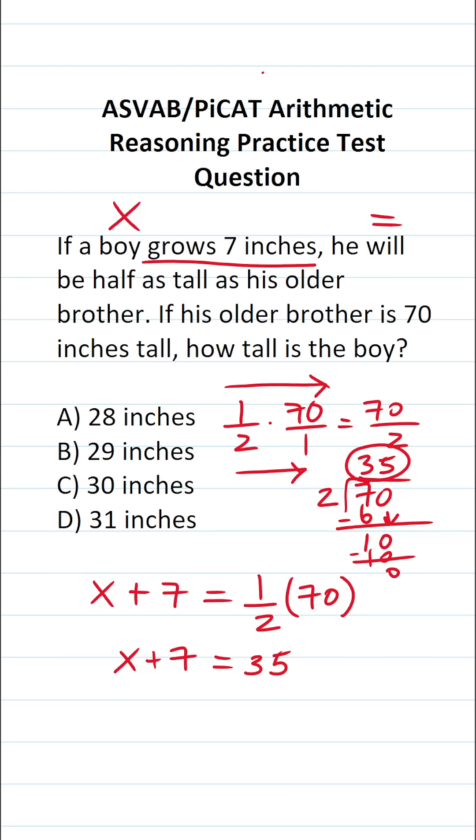Now we've got to solve for x, the height of the boy. To do that, we're simply going to subtract 7 from both sides of this equation. This crosses out, leaving us with x over here. What is 35 minus 7? I know that's going to be 28.